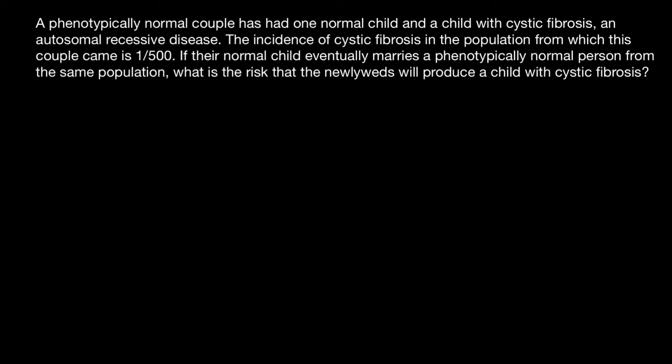Hello and welcome to Nikolai's genetics lessons. Today I'm going to show you how to solve population genetics problems. Here's a problem: a phenotypically normal couple has had one normal child and a child with cystic fibrosis, an autosomal recessive disease. The incidence of cystic fibrosis in the population from which this couple came is one out of 500.